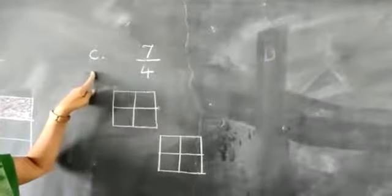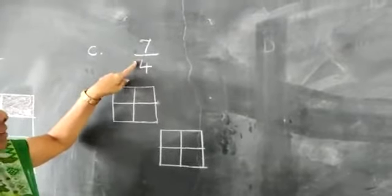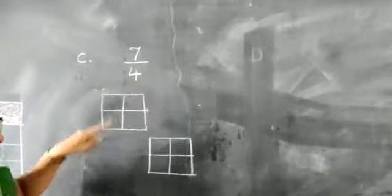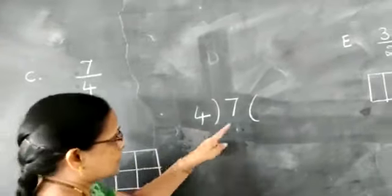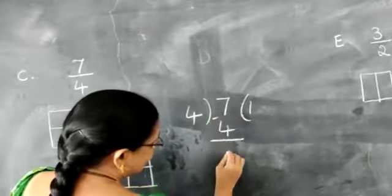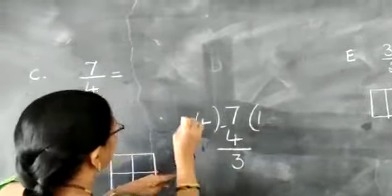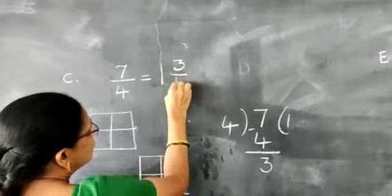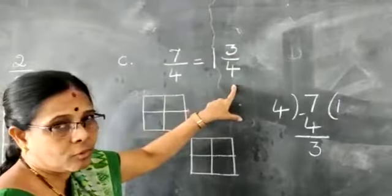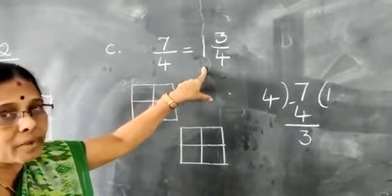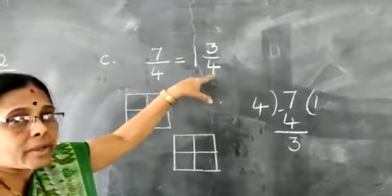Now part C: 7/4. Here the numerator is bigger than the denominator. So first you have to divide 7 by 4. 7 minus 4 is 3, so the answer is 1 and 3/4. This is a mixed fraction — 1 whole and 3/4. Draw 4 boxes for the whole, shade all 4 for 1 whole, then draw another set of 4 boxes and shade 3 for the 3/4 part.